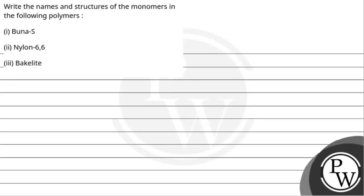Hello, let's see the question. The question says: write the names and structures of the monomers in the following polymers. First, Buna-S, second, Nylon-66, third, Bakelite.